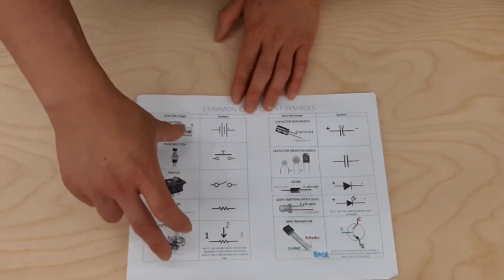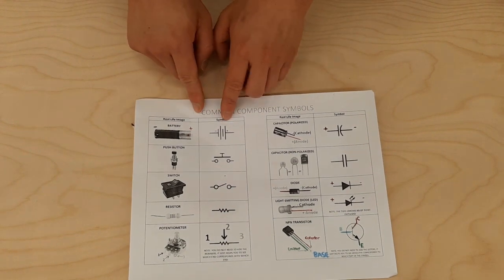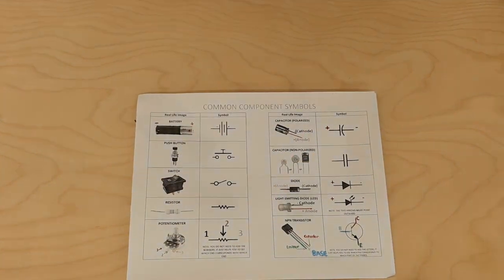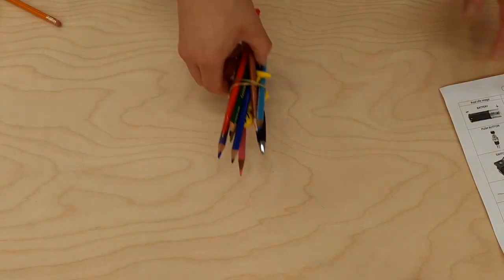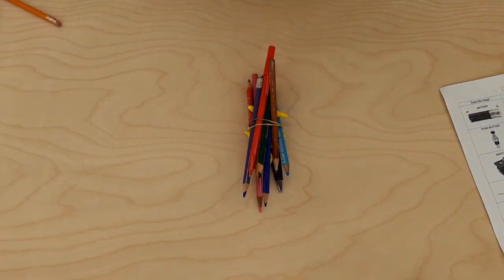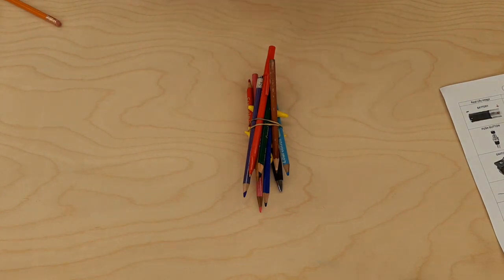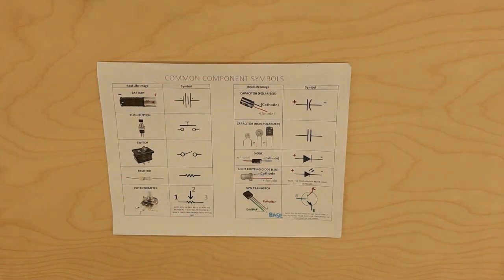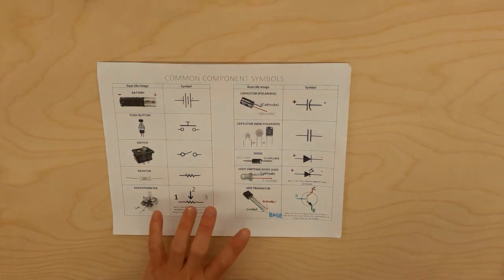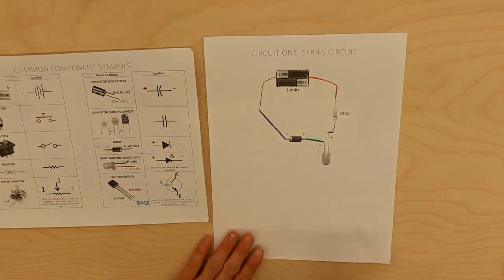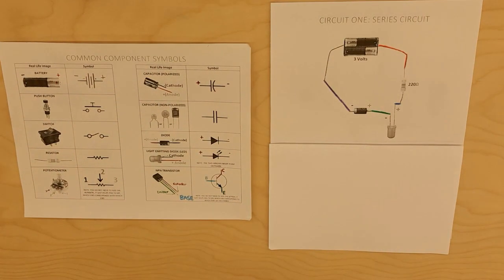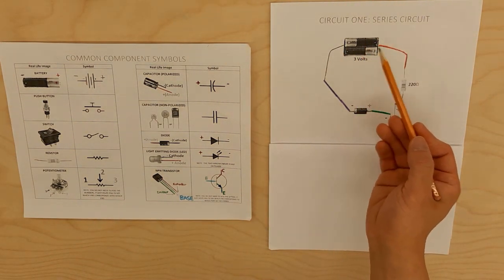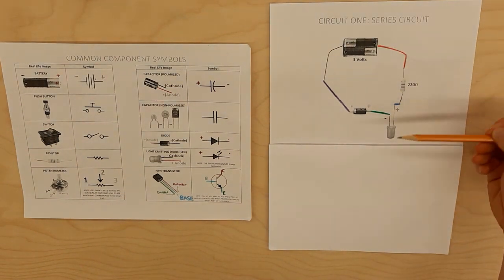On the decoder, to the right is what the component looks like and its name, and to the left is the schematic symbol. I'll be using pencil crayons to draw the lines, but when you're actually doing your schematic you won't need to use pencil crayons — just use a pencil or a pen. With our decoder handy, let's start and draw our schematic for our very first circuit together, starting with the battery and moving one component at a time.